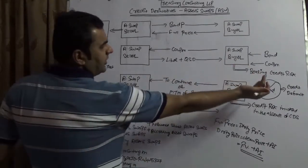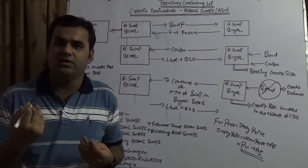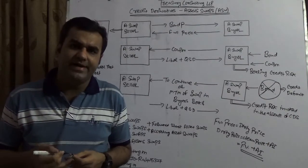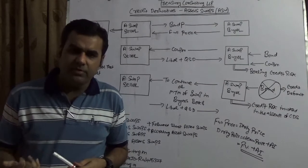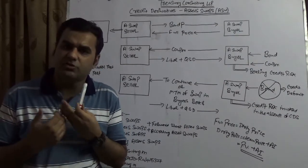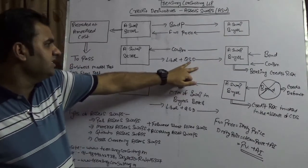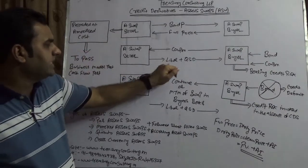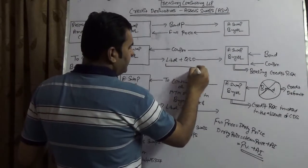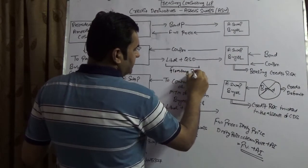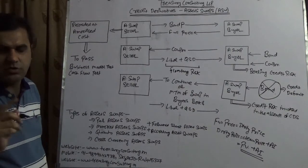The asset swap buyer holds the bond and the bond is giving a coupon. Of course, that bond carries credit risk. Even European governments like Greece, Italy, Ireland, and Portugal have credit risk — it is not only corporate bonds that carry credit risk. That credit risk is borne by the asset swap buyer. He is passing the same coupon to the asset swap seller and is receiving LIBOR plus QSD, where QSD stands for Quality Spread Differential. The buyer is thus taking floating risk into his books, converting fixed income to floating income.